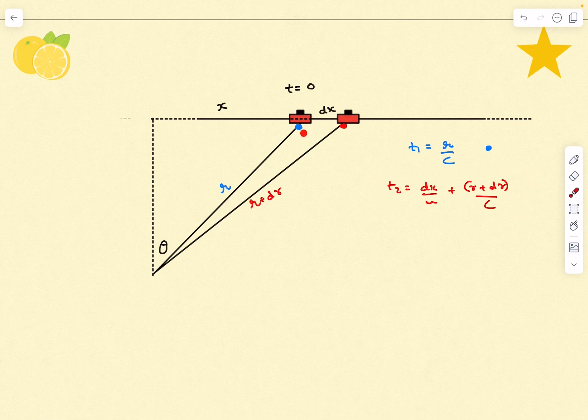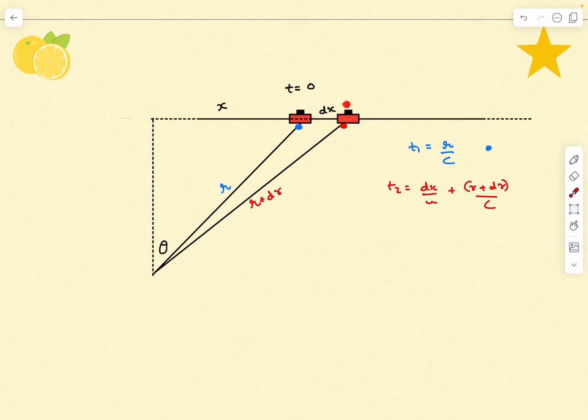The blue pulse was released at time t = 0. After that the UFO traveled the distance dx forward, so the time taken for that is dx/u, which is the speed of the UFO. After that point the UFO released a red light pulse which takes a time of (r + dr)/c to reach the observer's eyes.